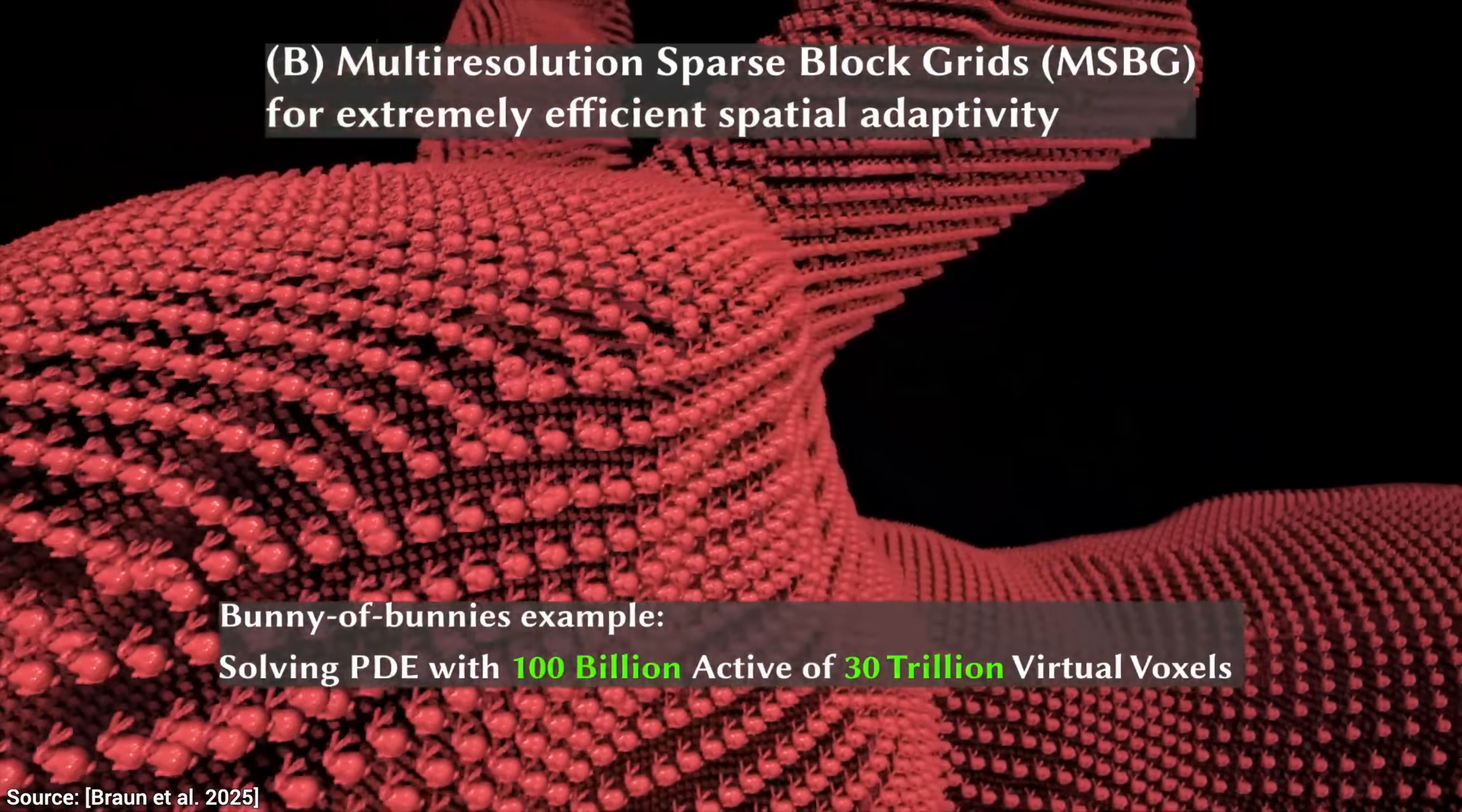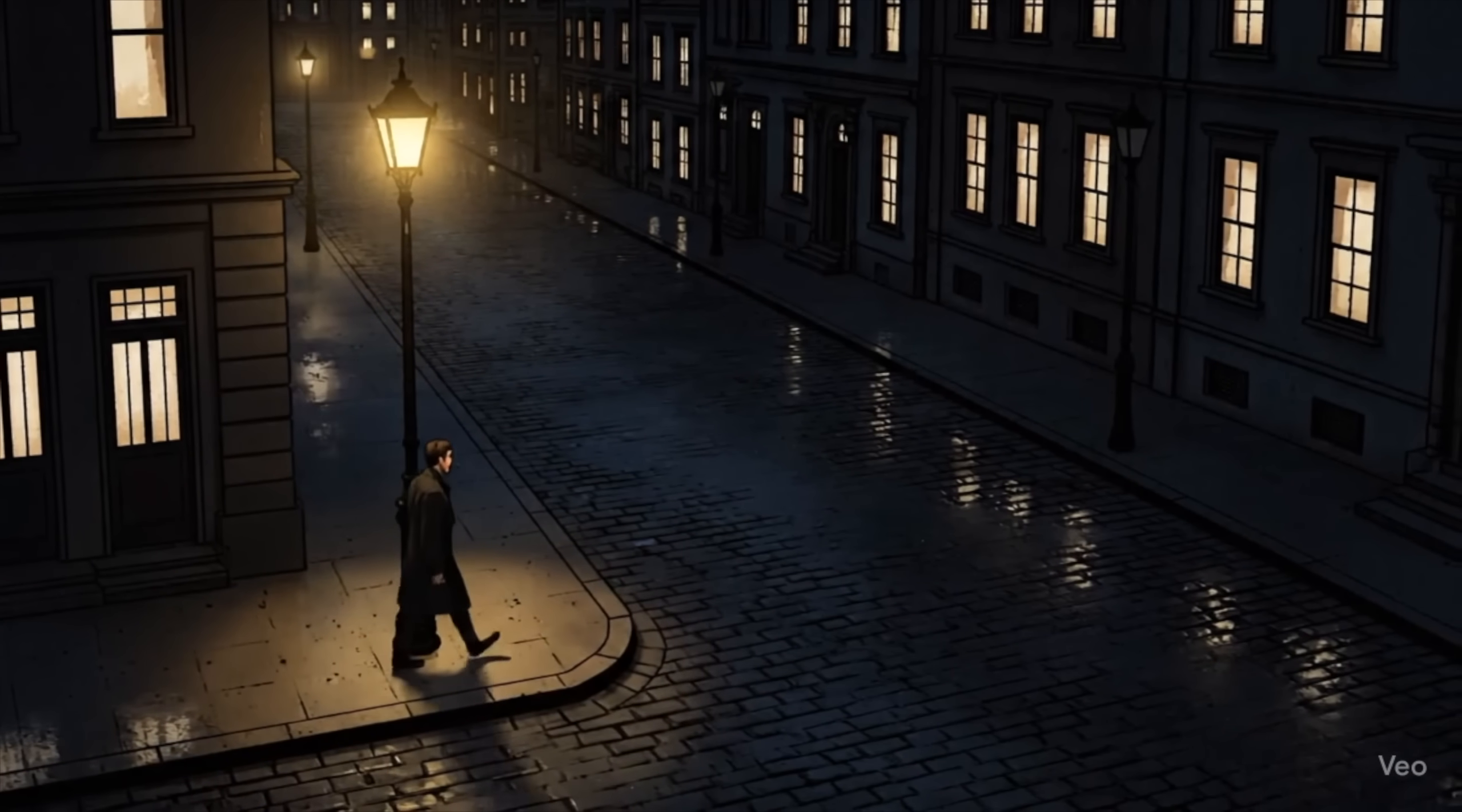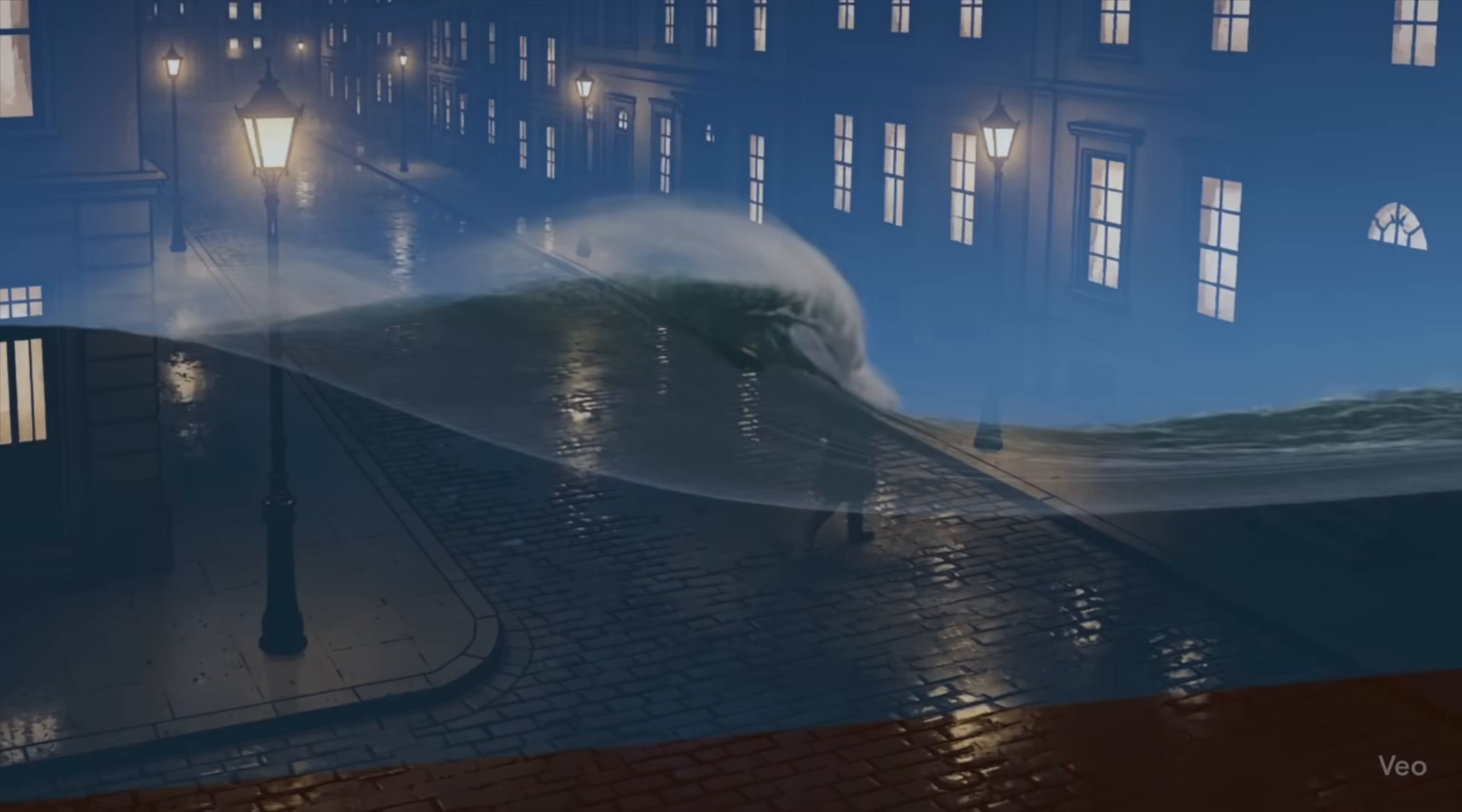Finally, this means we only spend computing where the action is, like putting streetlights only where people actually walk, instead of lighting up the entire street.